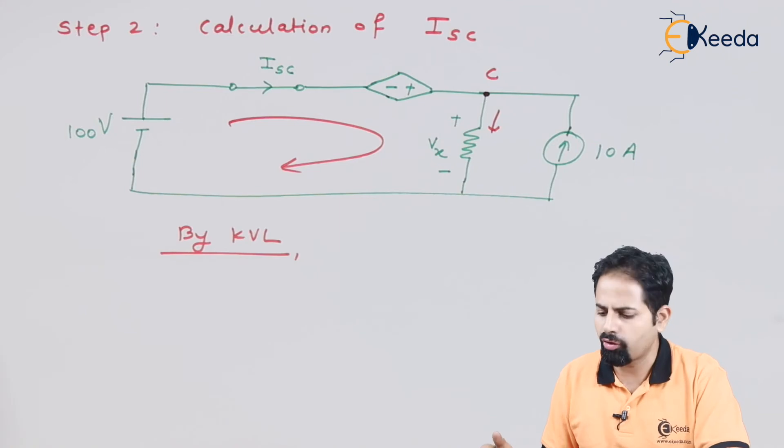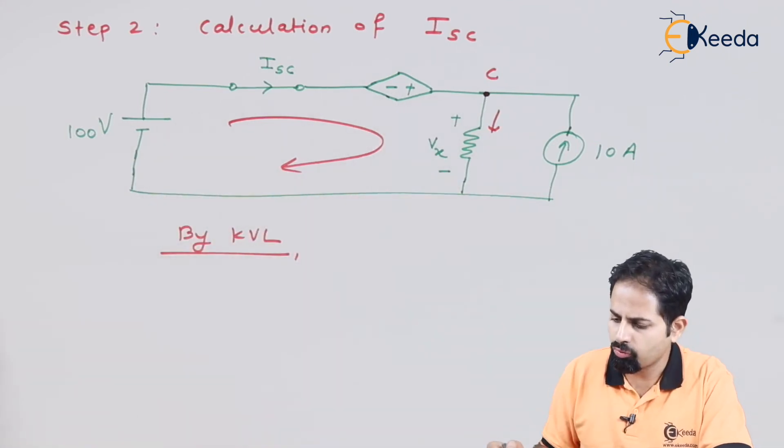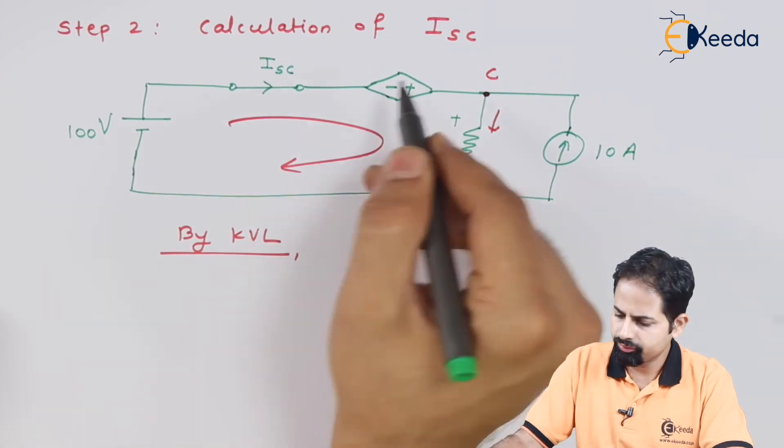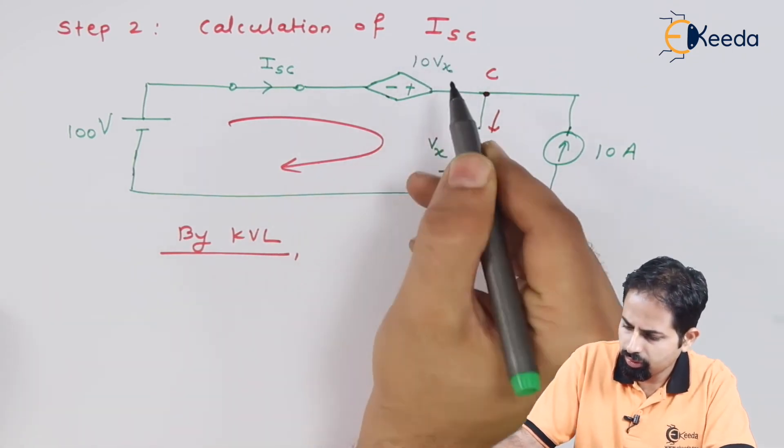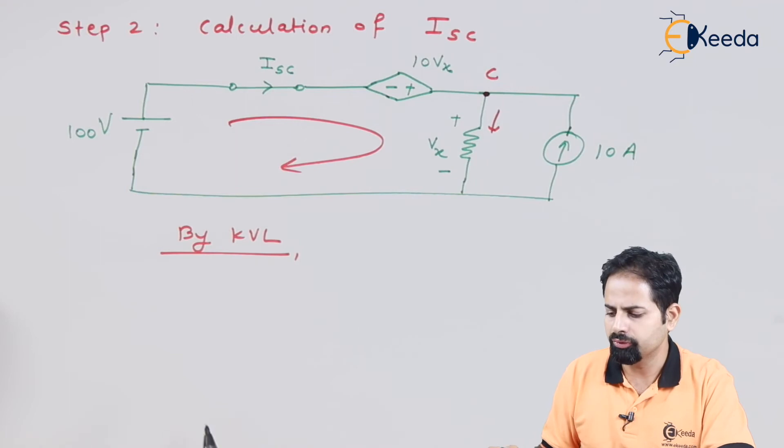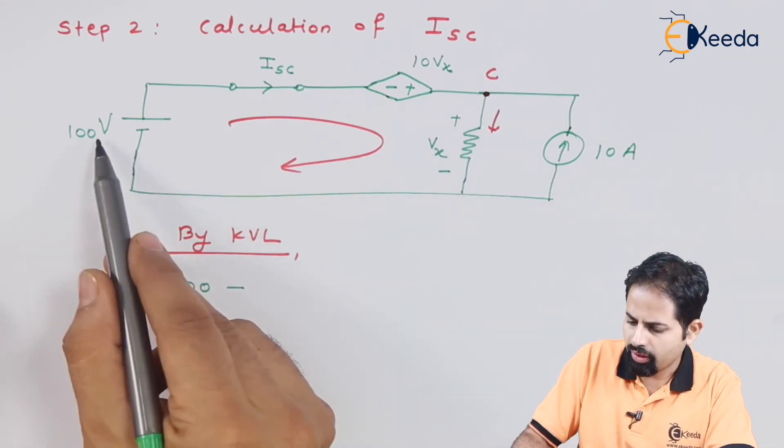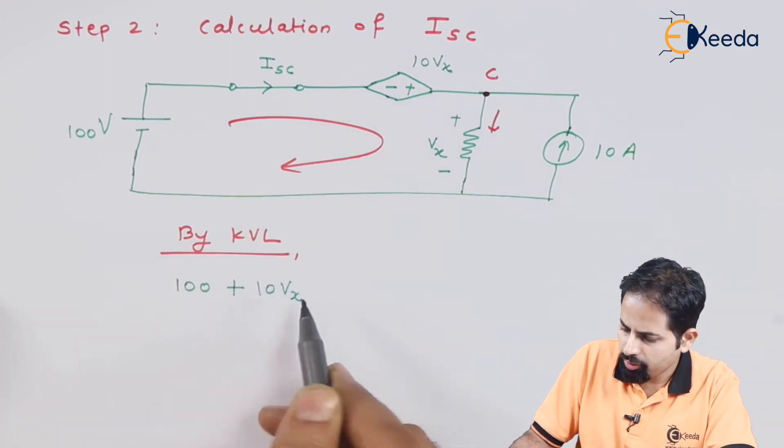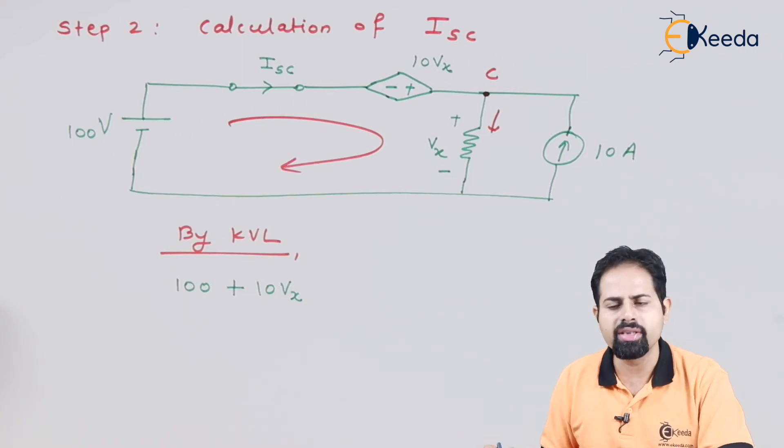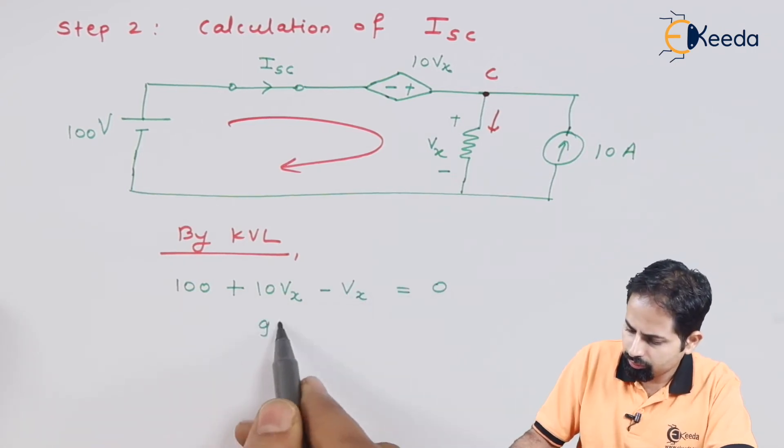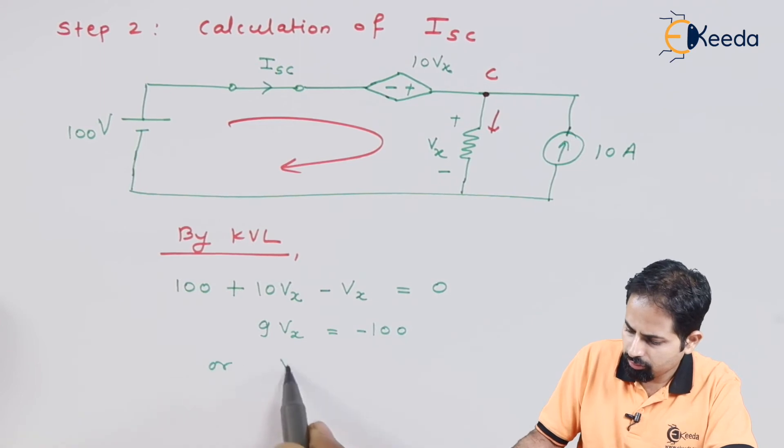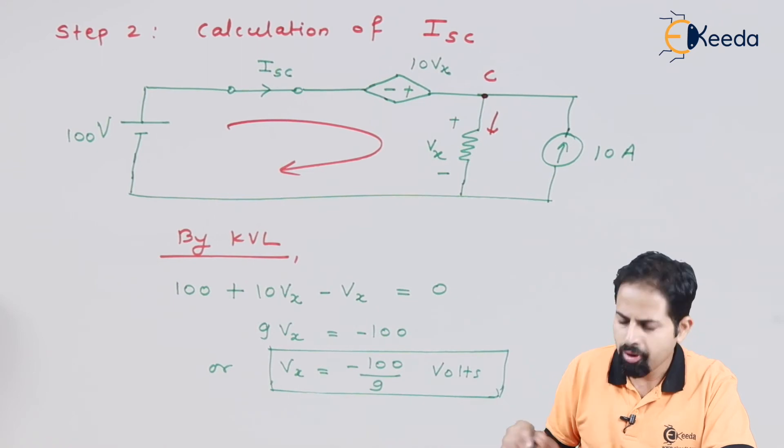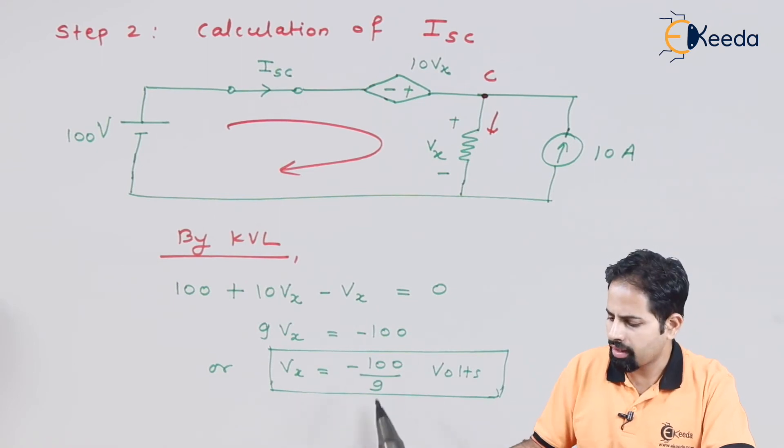So by KVL, what we can write is 100. Then value of this voltage source which is 10 into Vx negative to positive is positive. And then also we have Vx. So 100 then negative to positive is positive. So plus. And then positive to negative is negative.